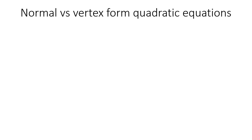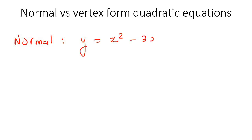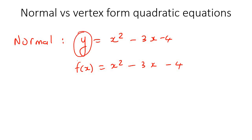Here's how it looks. For the normal one, they'll typically write it like y equals x squared take away 3x take away 4, or f of x equals 2x squared take away 3x take away 4. So they'll either have a y or an f of x — that's what I call the normal method.